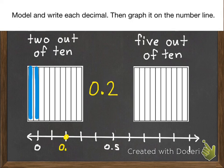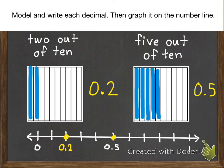All right. Here's two out of ten. Modeled, written, and graphed. Your second practice problem. Five tenths. And graphed right there in the middle.